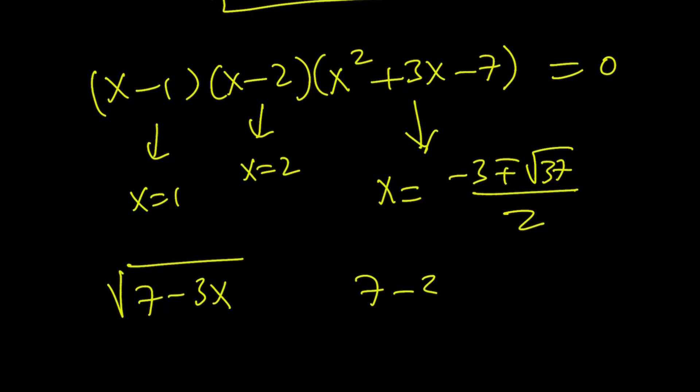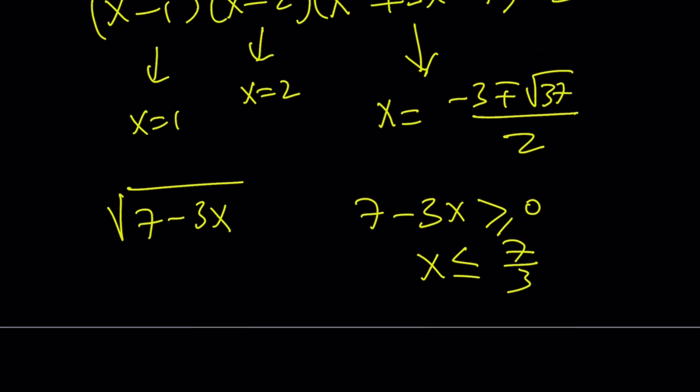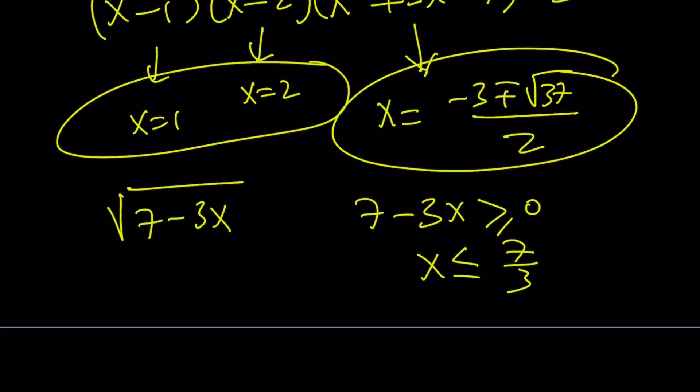The radical tells us that this radicand, whatever you want to call it, it's a weird name, needs to be greater or equal to 0, which means x is less than or equal to 7 thirds. So if you check our solutions, 1 and 2 are good. But if you look at this, you're going to notice that one of them is not going to be less than or equal to 7 thirds. How do you know that? You can definitely check that for yourself. But I'm going to show you a graph at the end. So let's save it for that part.